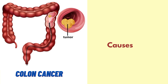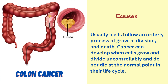Now, let's discuss about the causes for this condition. Usually, cells follow an orderly process of growth, division and death. Cancer can develop when cells grow and divide uncontrollably and do not die at the normal point in their life cycle.